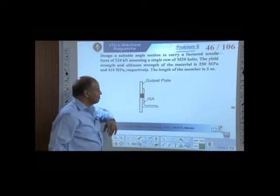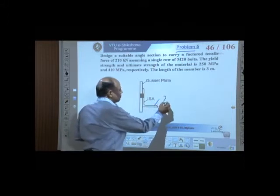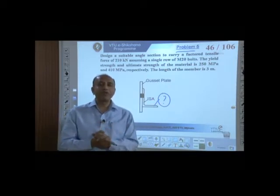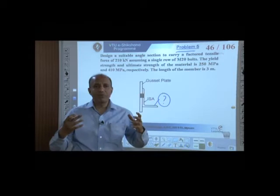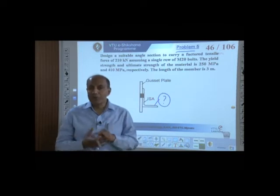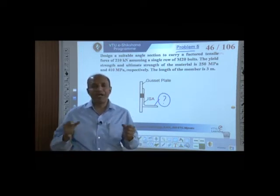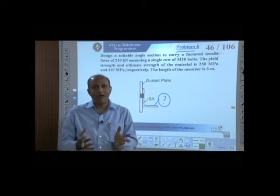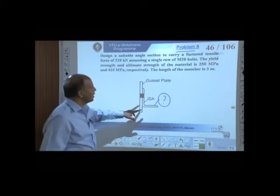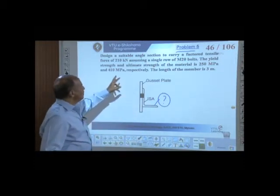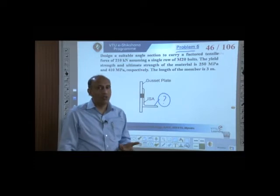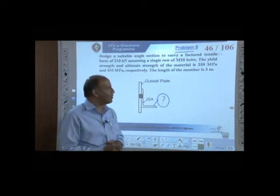We are asked to design a suitable angle. In the first problem, the angle and bolt details were all given. In problem 2, the angle was given but bolts were not specified. Now in problem 5, we have to design the angle itself — we have to arrive at what angle we should use in this particular case.